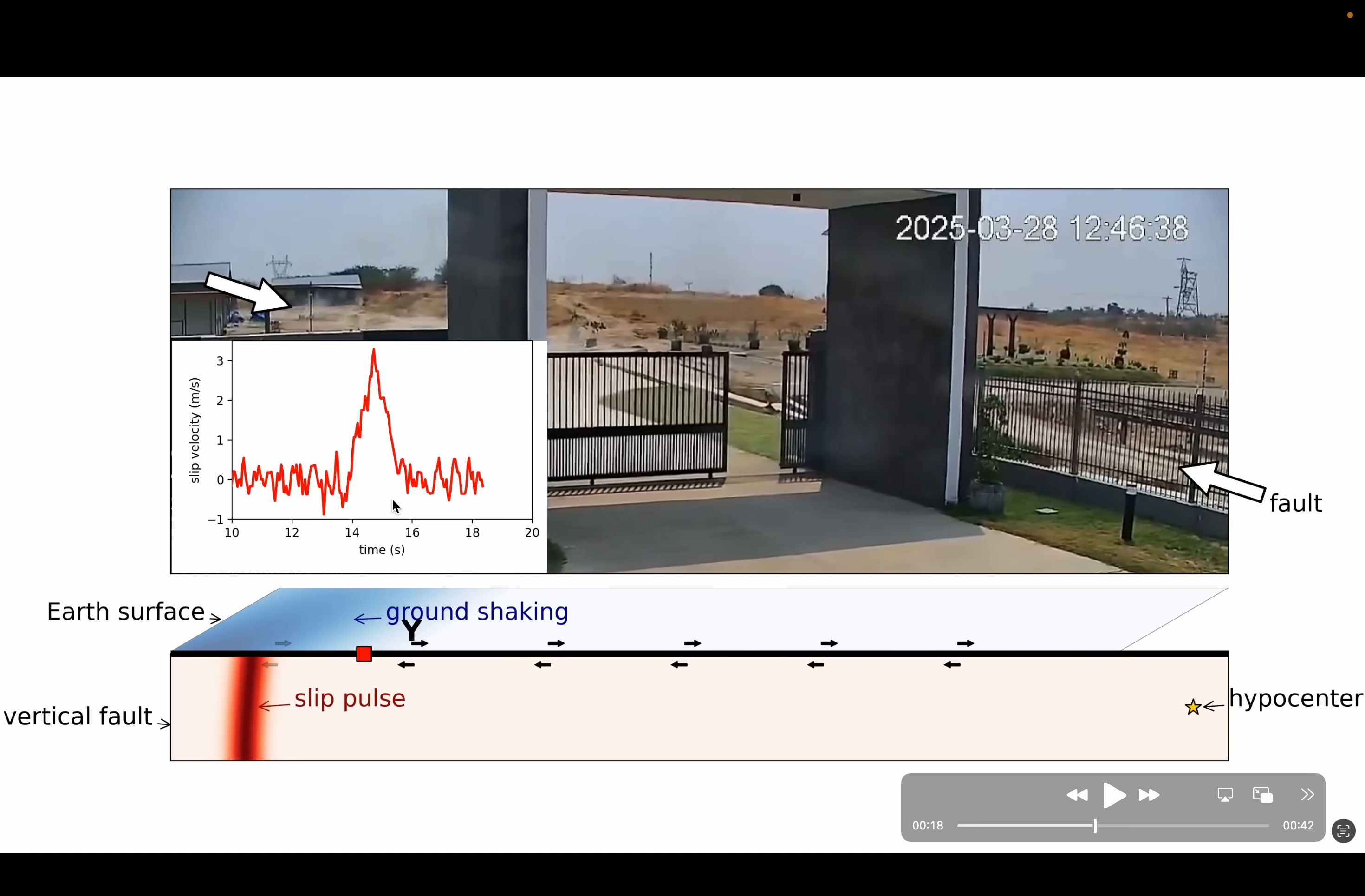This red graph here shows you the slip velocity, the speed at which the fault was moving as the rupture passed by. You can see that the fault reached the maximum velocity of about 3 meters per second.